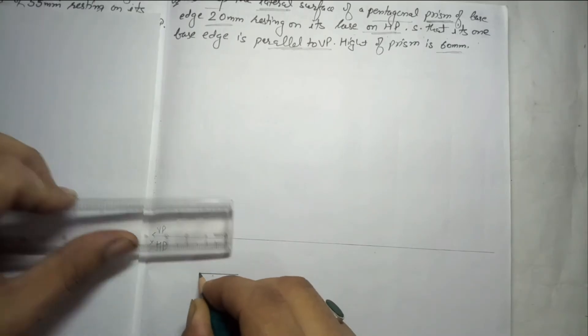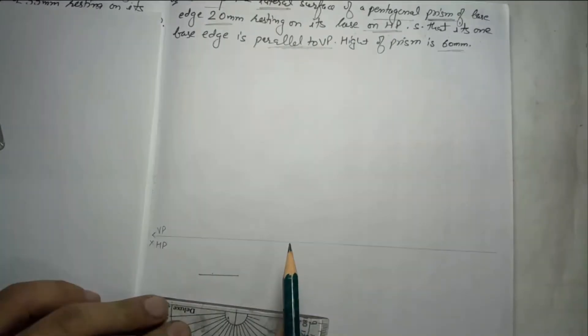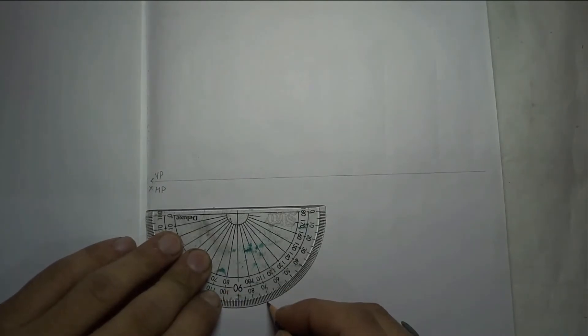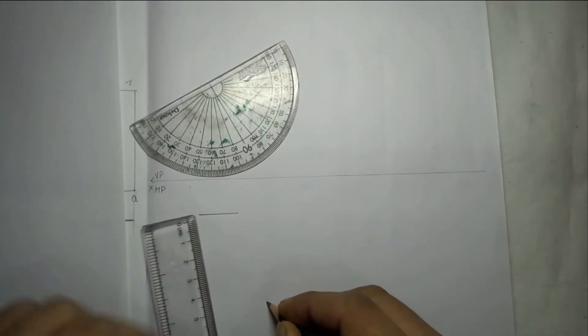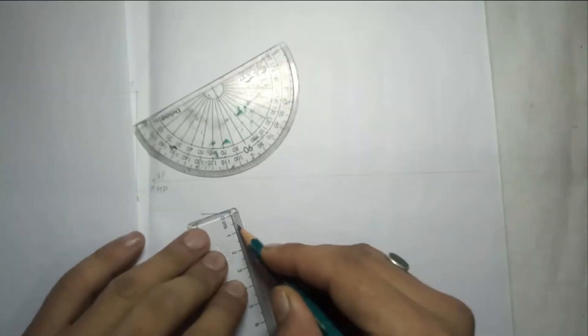I have taken 20 on this side. Now why I have taken this line? Because it is given in the question one base edge is parallel to VP, which means parallel to XY also. From this side, 108 degrees, so I'm taking 110. Now after that we have to mark the same, 120mm on this side.